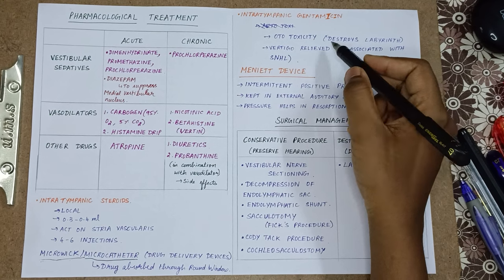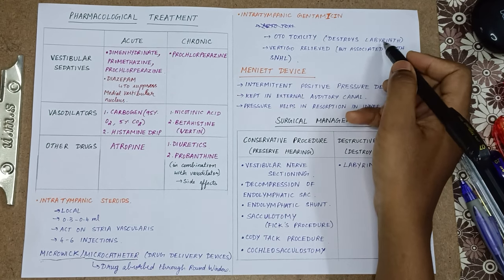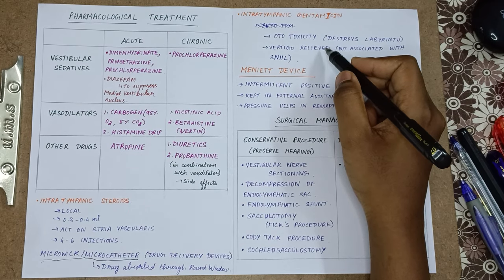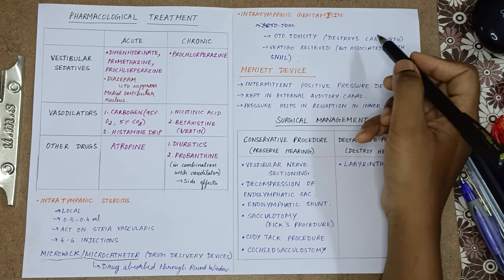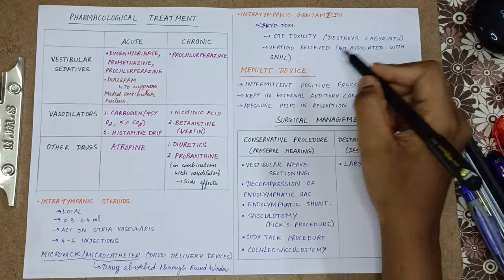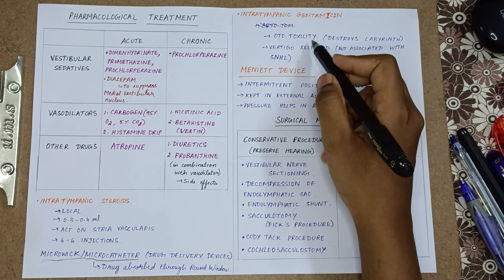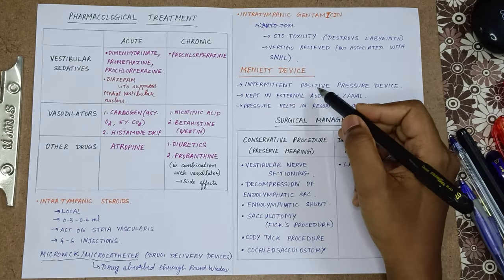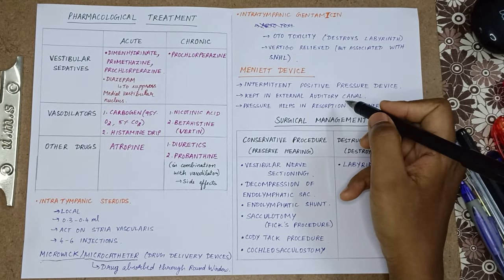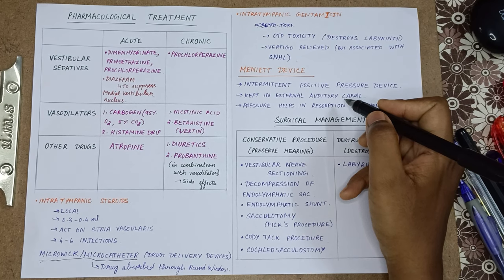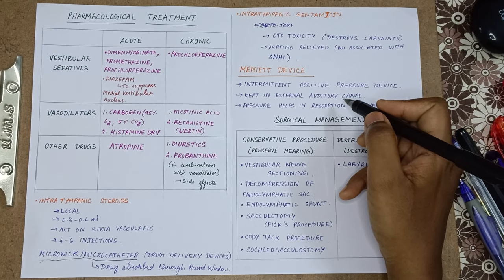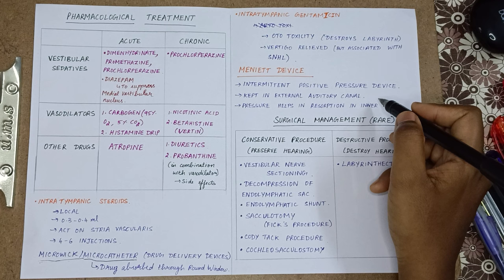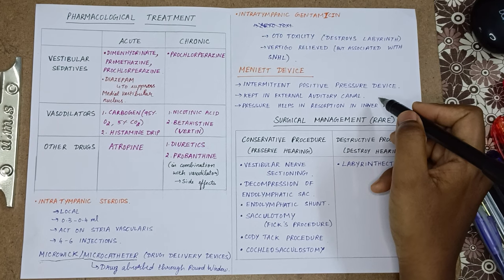The next treatment is intratympanic gentamicin. Gentamicin is usually not given because it is ototoxic — it destroys the labyrinth. However, when there is excessive uncontrollable vertigo, gentamicin is given, but it causes permanent sensorineural hearing loss. The Meniett device is an intermittent positive pressure device that is permanently kept and sends pressure to help in resorption in the inner ear, decreasing the endolymph and reducing Meniere's disease symptoms.